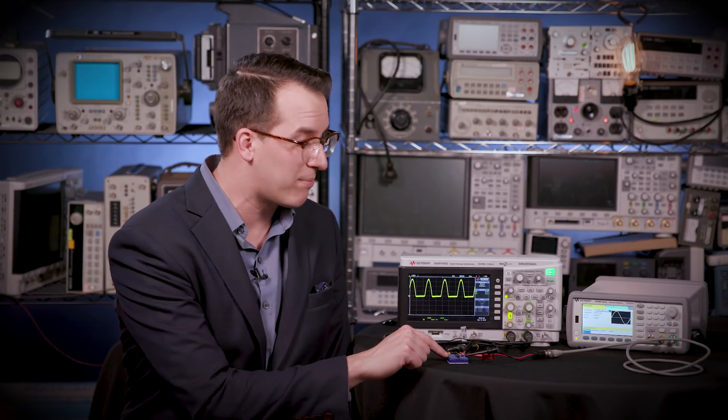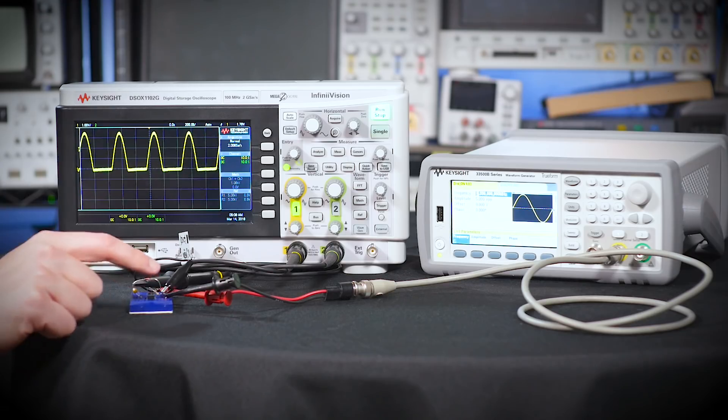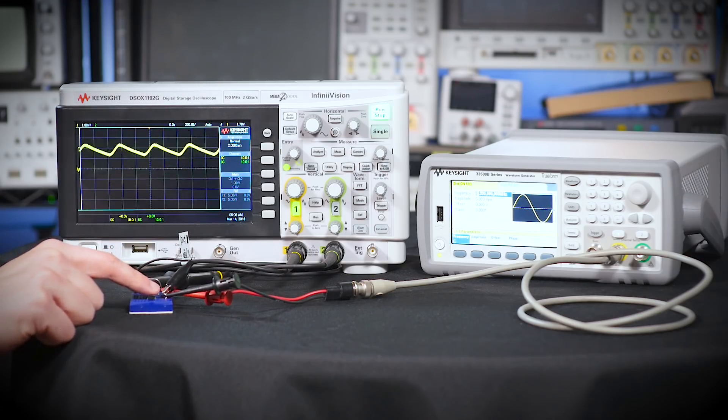Bring a capacitor into the mix, and you can do a couple things. First, you can smooth out your waveform. So here I have my half bridge rectifier, and I have a capacitor on a switch, and when I switch in that capacitor, you can see that my ripple has gone down significantly, and my rectified signal is much smoother.